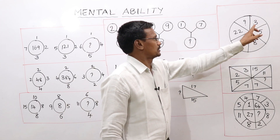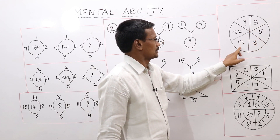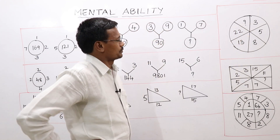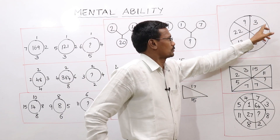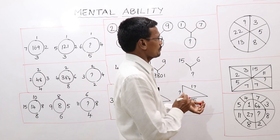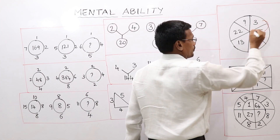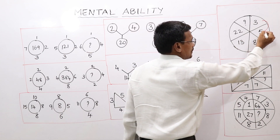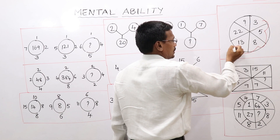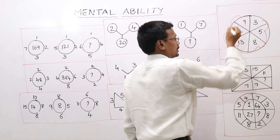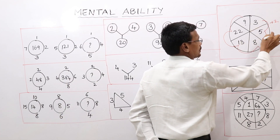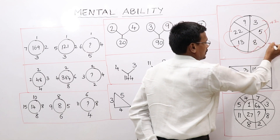Here we have 3, 5, 8, 13, and 22. Now let's look at what happens here. We can see the numbers. Looking at the differences: here we have plus 2 — 3 plus 2 is 5. Then 5 plus 3 is 8.